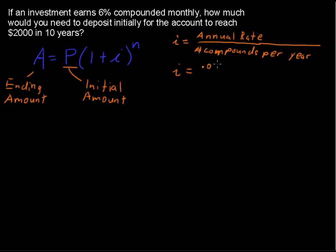Again, every time you see a percent when it goes into a formula, almost always, and this one especially, it goes in as a decimal. So 6% equals .06 divided by, it's compounded monthly, so that is 12 times per year. So this i in our problem will equal .005.